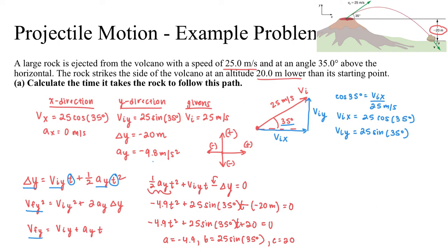In this case, I'm going to approximate b as 14.339, keeping as many decimal places as possible, just for calculation. So I'll show my quadratic formula here. Negative b plus or minus the square root of b squared minus 4ac over 2a.